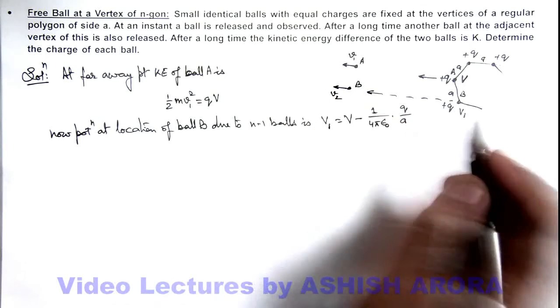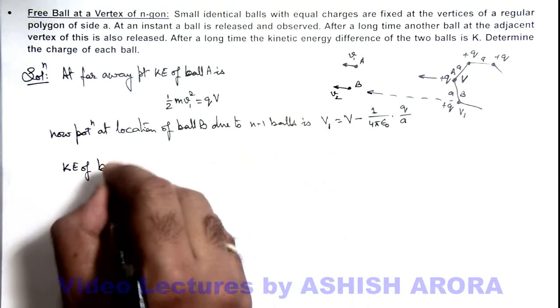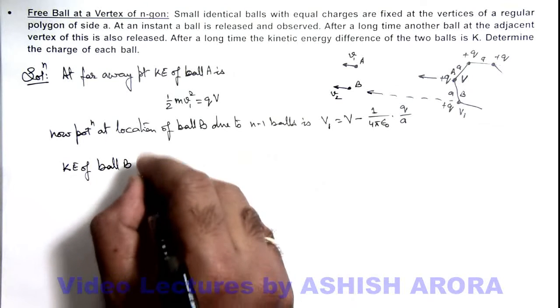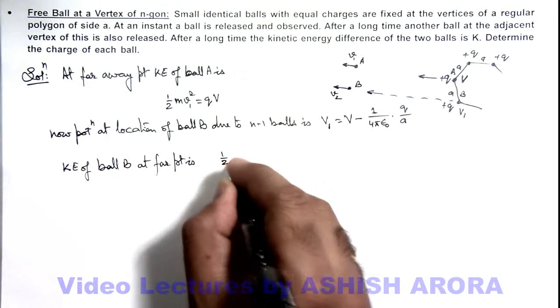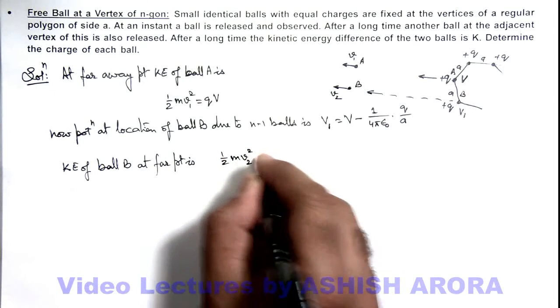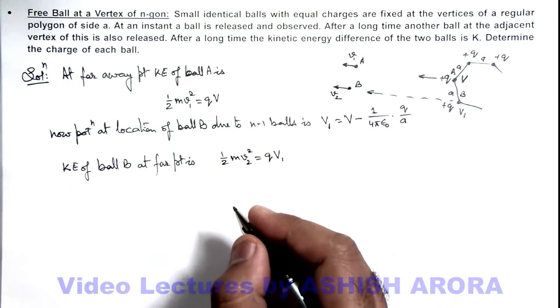So I can write kinetic energy of ball B at far point is, this can be given as ½mv₂² which is equal to qv₁. So in this situation we are given the problem that K is the difference in kinetic energy of the two balls.